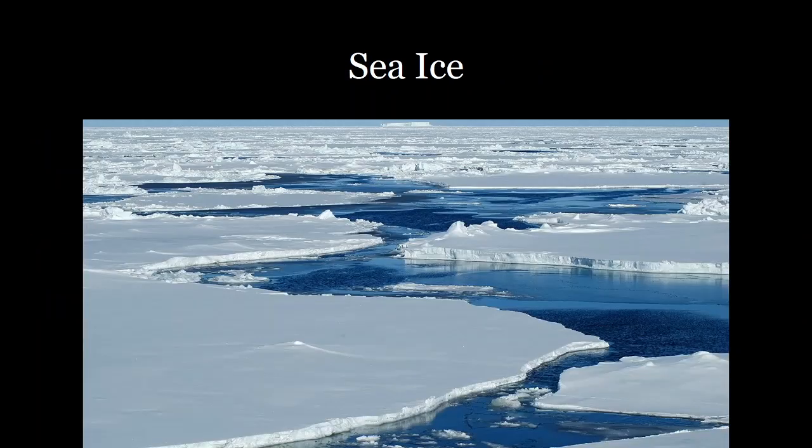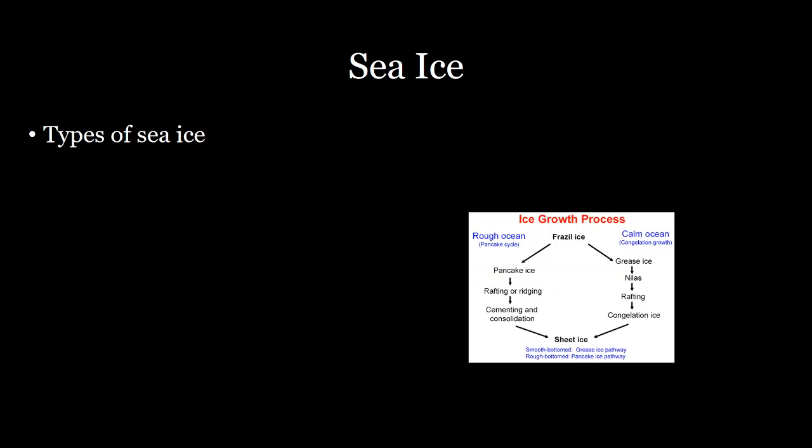Another big component of the cryosphere is sea ice, which covers a large portion of the ocean in the Arctic and Antarctic. There are many different types of sea ice.